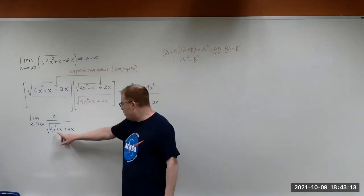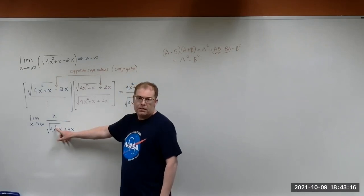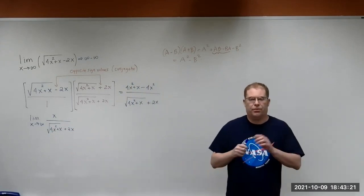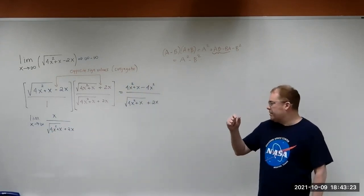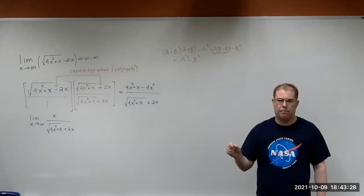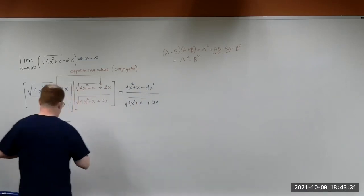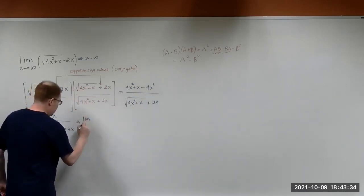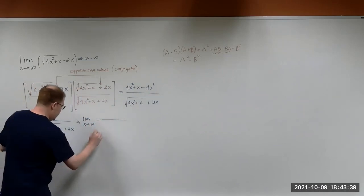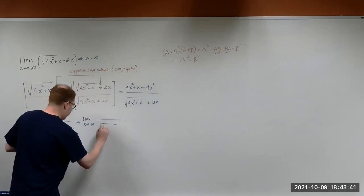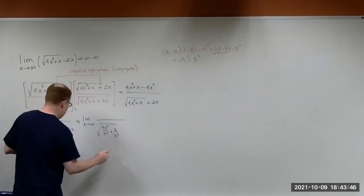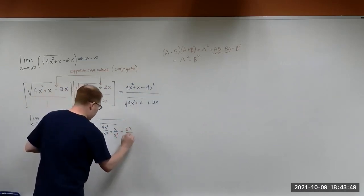Looking at the denominator, we notice we have x squared, which has the highest degree. So what we're going to do is take that term — x squared — and divide each term by x squared. We'll start in the denominator: we'll have the square root of 4x squared over x squared, plus x over x squared, plus 2x over x squared.